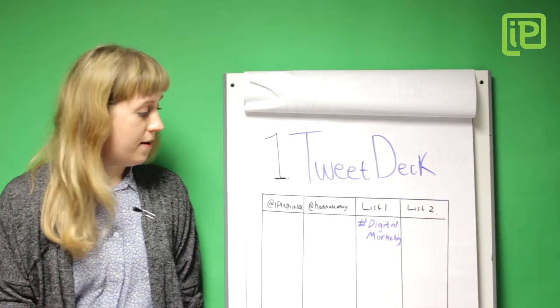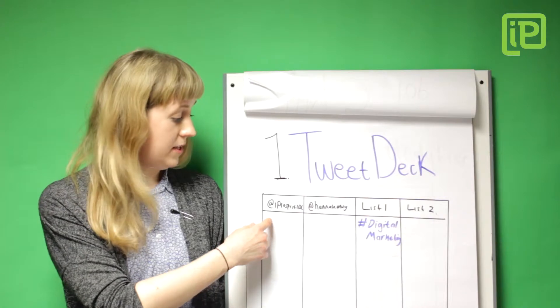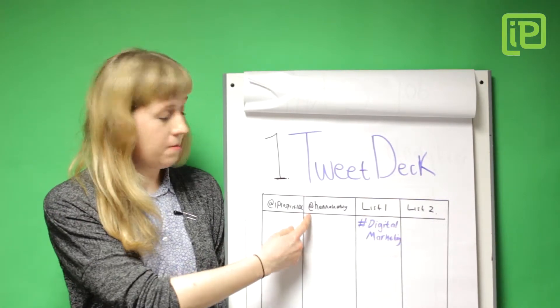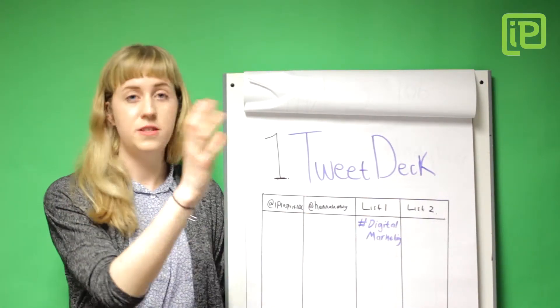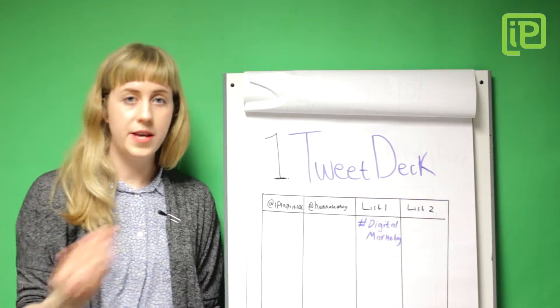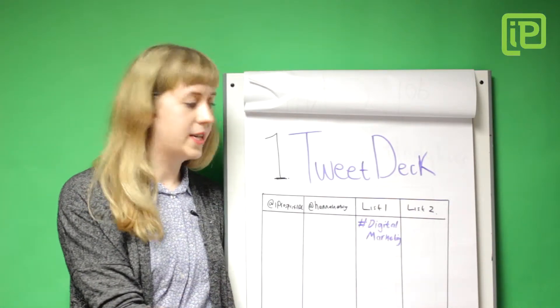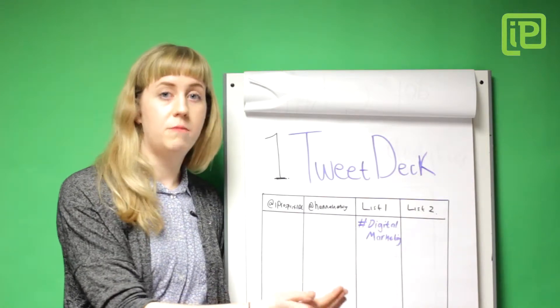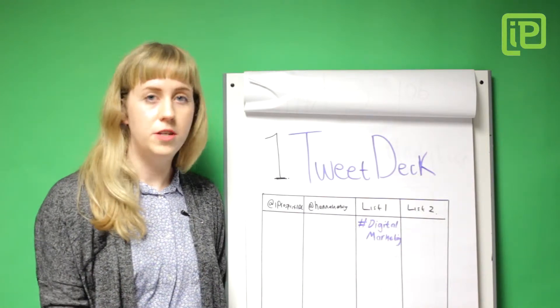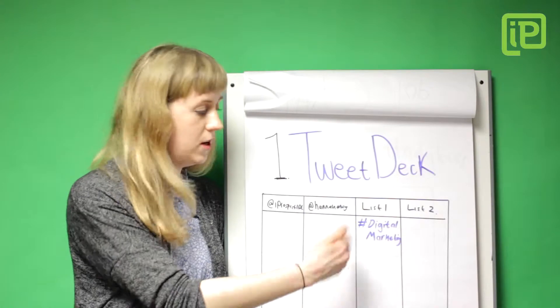In my case I have my own feeds such as the iProspect feed and my own personal Twitter feed, so that lets you see whoever you're following. Or you can get more customized and personalized and create lists with certain hashtags. So in this case we might be following hashtag digital marketing to stay on top of any ongoing news, so you can keep a constant eye on that and it will constantly update as well.